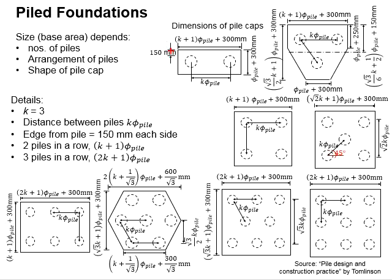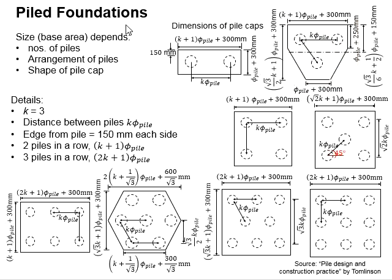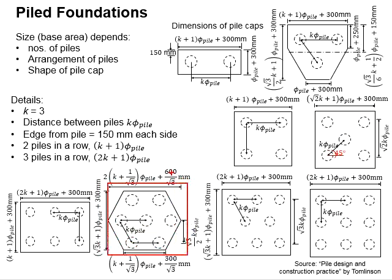Rectangular pile cap shapes are applicable for 2 units and 6 units of piles. Triangular shapes are used for 3 units of piles, square pile caps for 4 units and 9 units, pentagonal for 5 units, and hexagonal shapes for 7 units of piles.